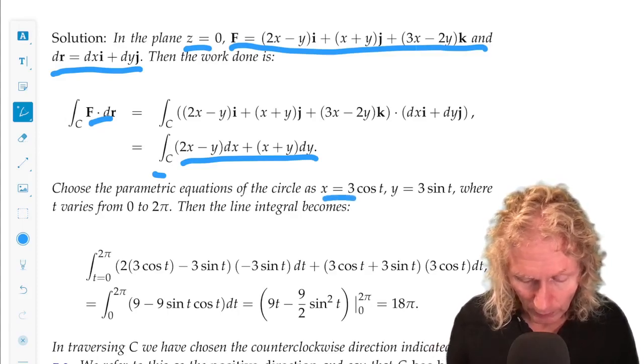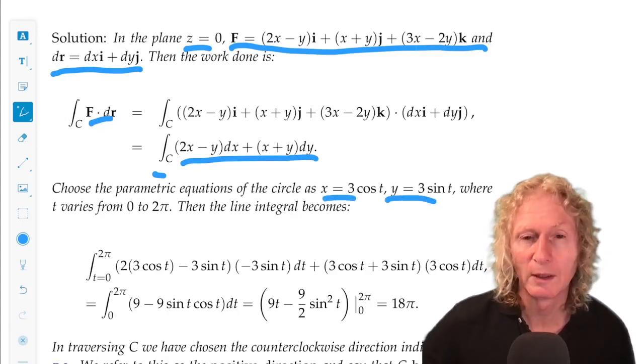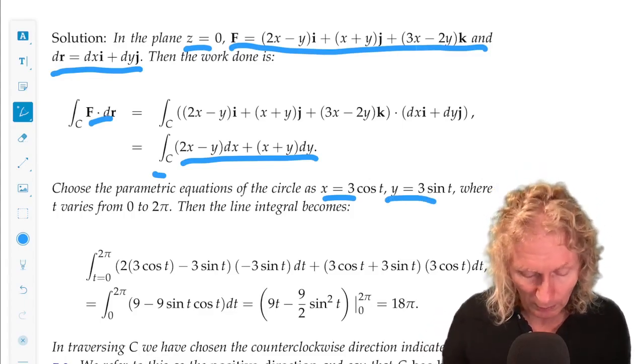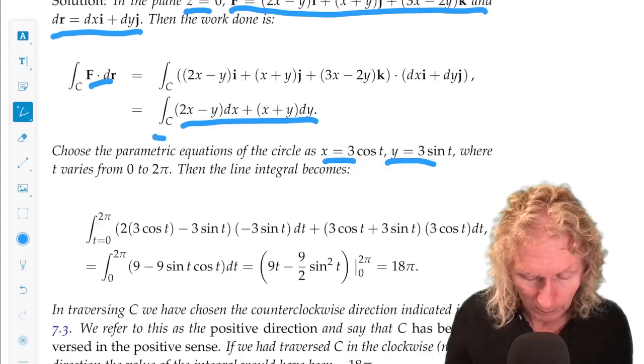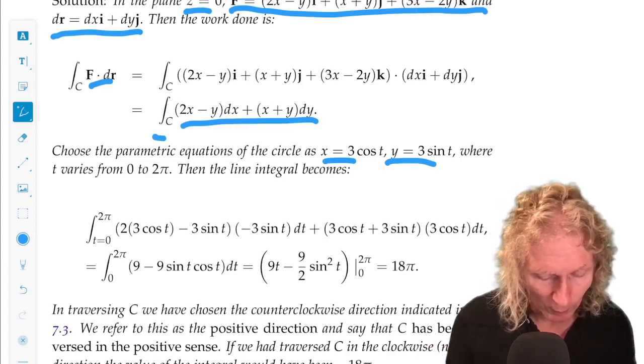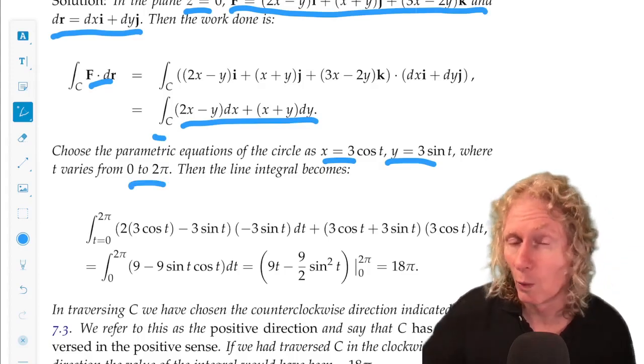So x equal 3 cosine t, y equal 3 sine t is the parameterization of a circle in the xy plane with radius three. And then in that case, t would vary from zero to two pi, will take us all the way around the circle.